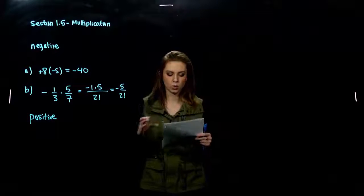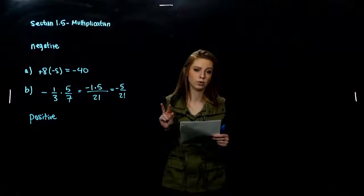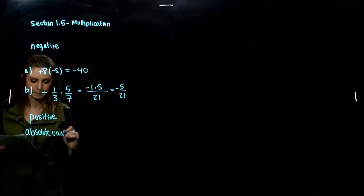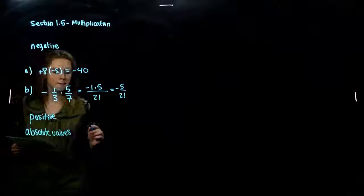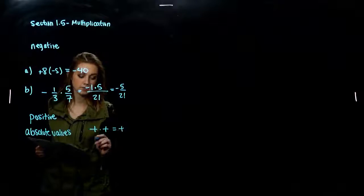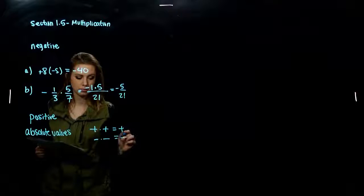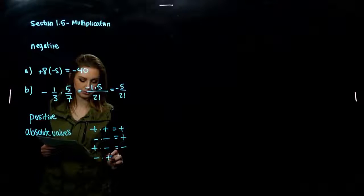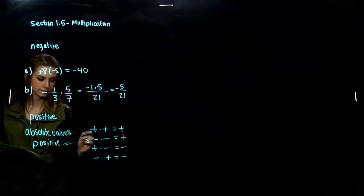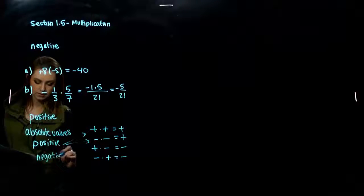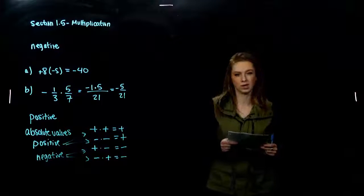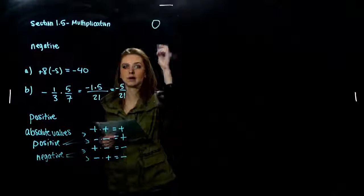To summarize: to multiply two non-zero real numbers, we multiply their absolute values and then determine the sign. If the signs are the same — positive times positive, or negative times negative — we get a positive. If the signs are opposite — a plus and a minus, or a minus and a plus — we get a negative. And the product of any real number and zero is zero. Zero times anything is always zero.